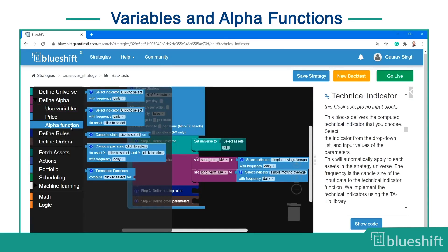You would have noticed various options in the alpha function such as indicators, statistical functions, time series functions, and pair stats. You can explore and play around with them.